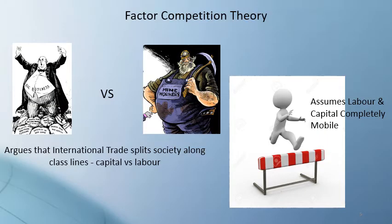Starting with the society-centered theories: the first major one is factor competition theory, which argues that international trade splits along class lines. Trade policy is a struggle between classes — so rich and poor, capitalists and workers — though it does assume that labor and capital are completely mobile, which is not really a correct assumption.